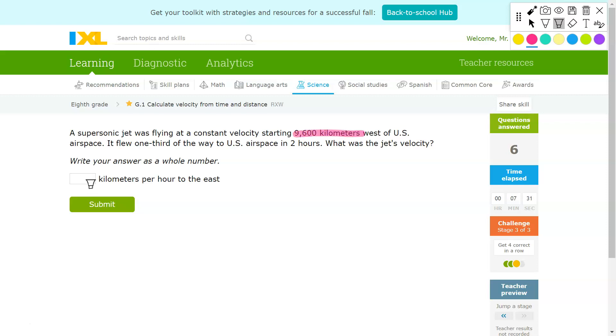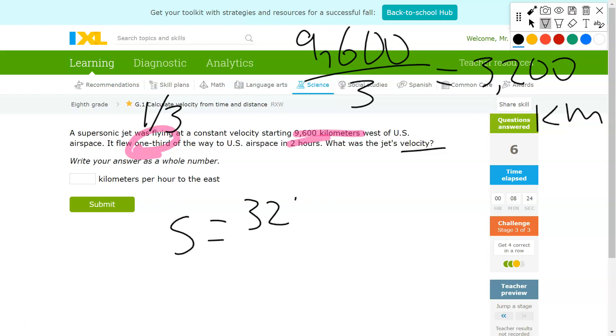9,600 kilometers, 2 hours, and then one third of the way. What was the jet's velocity? It flew one third of the way to the airspace in two hours. So only a third of the actual distance was covered in that time. I'm going to take 9,600 kilometers and divide by 3. That gets us 3,200 kilometers. Then plug that into the formula. 3,200 kilometers divided by 2 hours. That should get you 1,600 kilometers per hour.